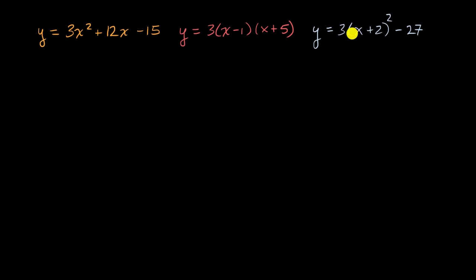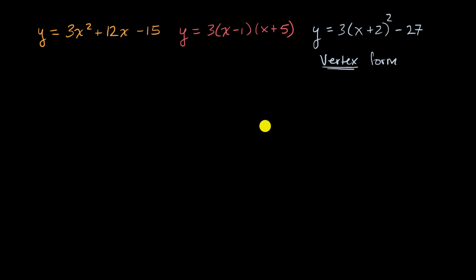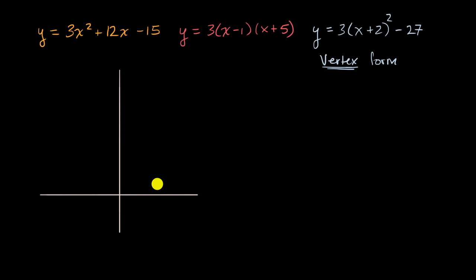We're not going to focus on how to get from one of these other forms to vertex form in this video — we'll do that in future videos. But what we're going to do is appreciate why this is called vertex form. To start, let's just remind ourselves what a vertex is. If we have a quadratic and we're graphing y is equal to some quadratic expression in terms of x, the graph of that will be a parabola.